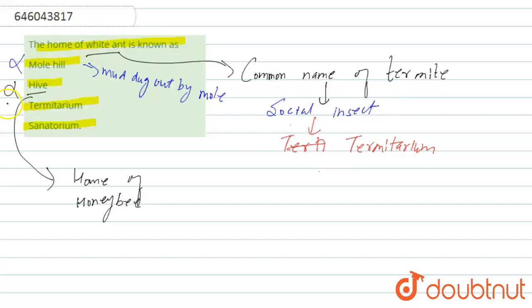Option 4 is sanatorium. Actually, sanatorium is a place used for treatment of chronic diseases.